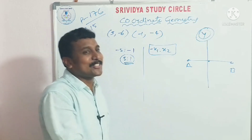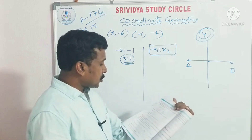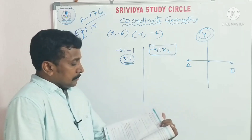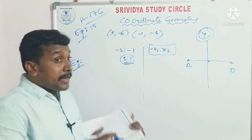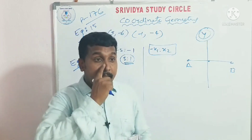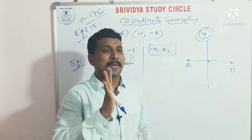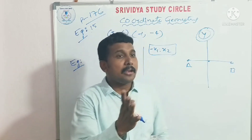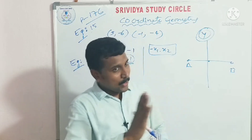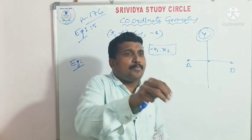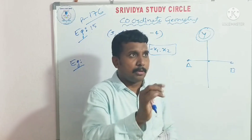Next is Example 16. In the last class, we covered four conditions for a quadrilateral — square, rhombus, rectangle — and when sides are parallel.